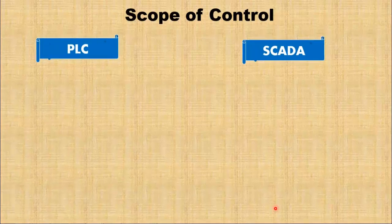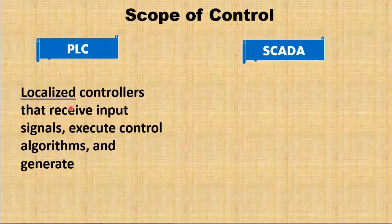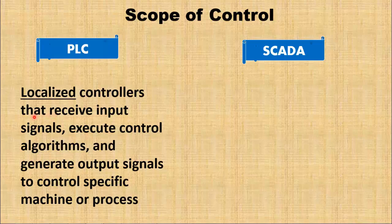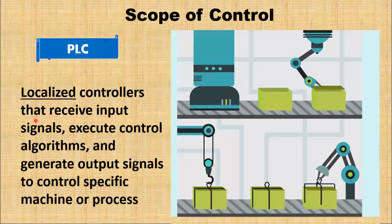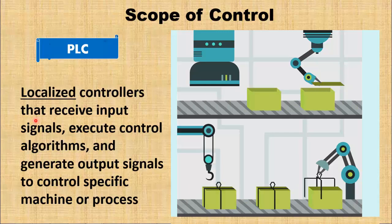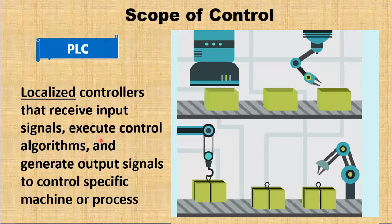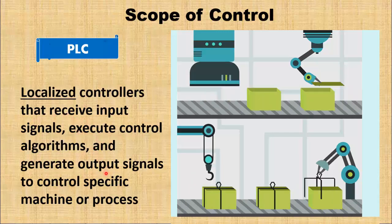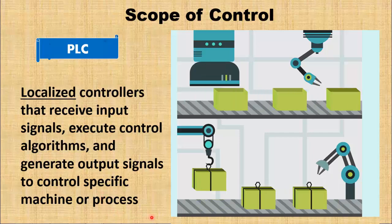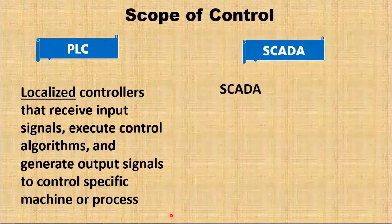Another difference is based on scope of control. PLCs are localized controllers, or dedicated controllers, typically responsible for controlling a specific machine or process. They receive input signals, execute control algorithms, and generate output signals to control the connected equipment.